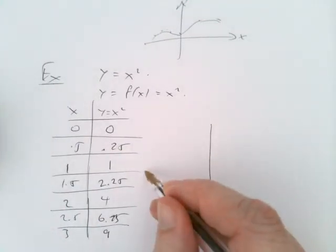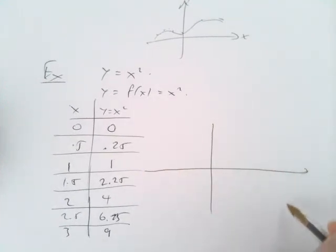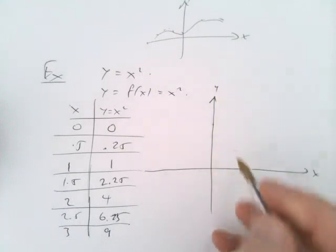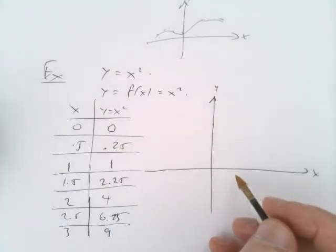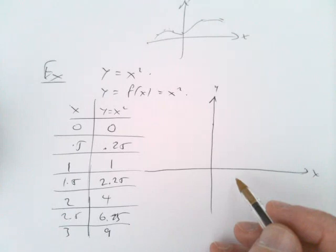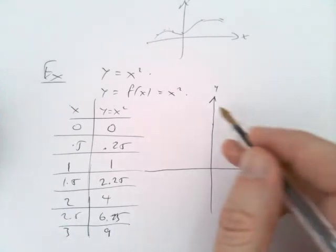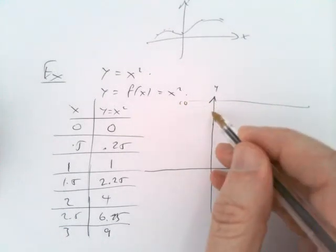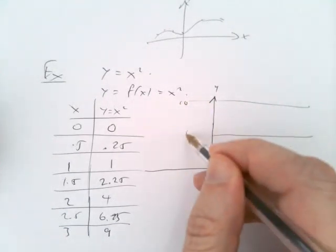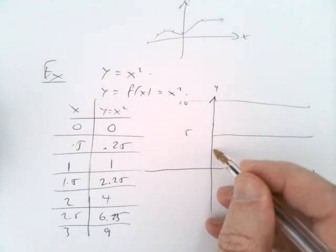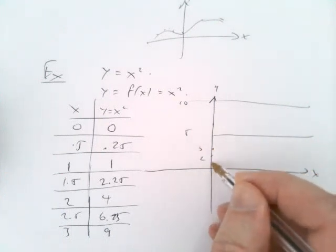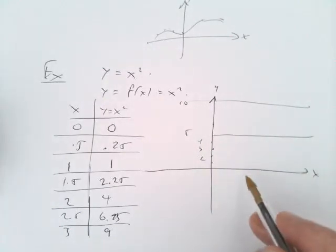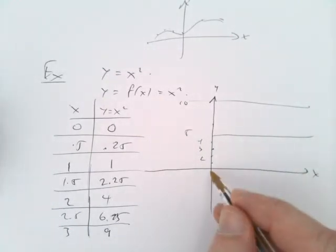Then we try and come up with a picture based on that. We need some x axis and some y axis. The highest values we need are around 9. So if we make this be 10, that'll be 5, and here's about 2, 3, 1, 4.